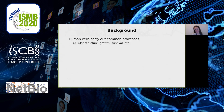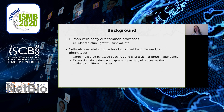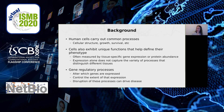Human cells carry out many different common processes, for example processes that define cellular structure and influence cell growth and survival. However, cells also exhibit unique functions that help define their phenotype. These have traditionally been measured by tissue-specific gene expression or protein abundance. However, expression data alone does not capture the variety of processes that distinguish different tissues. Gene regulatory processes are very important — they alter which genes are expressed and also control the extent of that expression. The disruption of gene regulatory processes can drive disease, and that's why we believe it's important to model gene regulatory networks for understanding tissue-specific gene regulation.